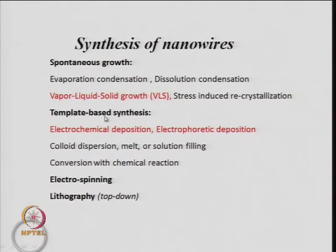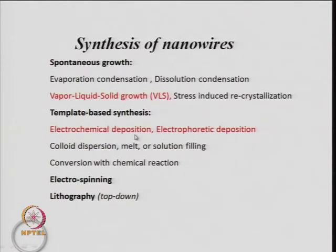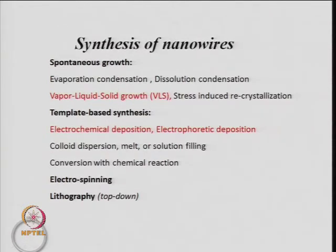We can also synthesize nanowires using templates — called template-based synthesis. The two main techniques discussed are electrochemical deposition, mainly for metallic nanowires, and electrophoretic deposition, which can make nanowires of both metals and metal oxides, including non-conducting ones. Conducting nanowires can be made by both electrochemical and electrophoretic methods. Other techniques not discussed in detail include colloidal dispersion and electrospinning.